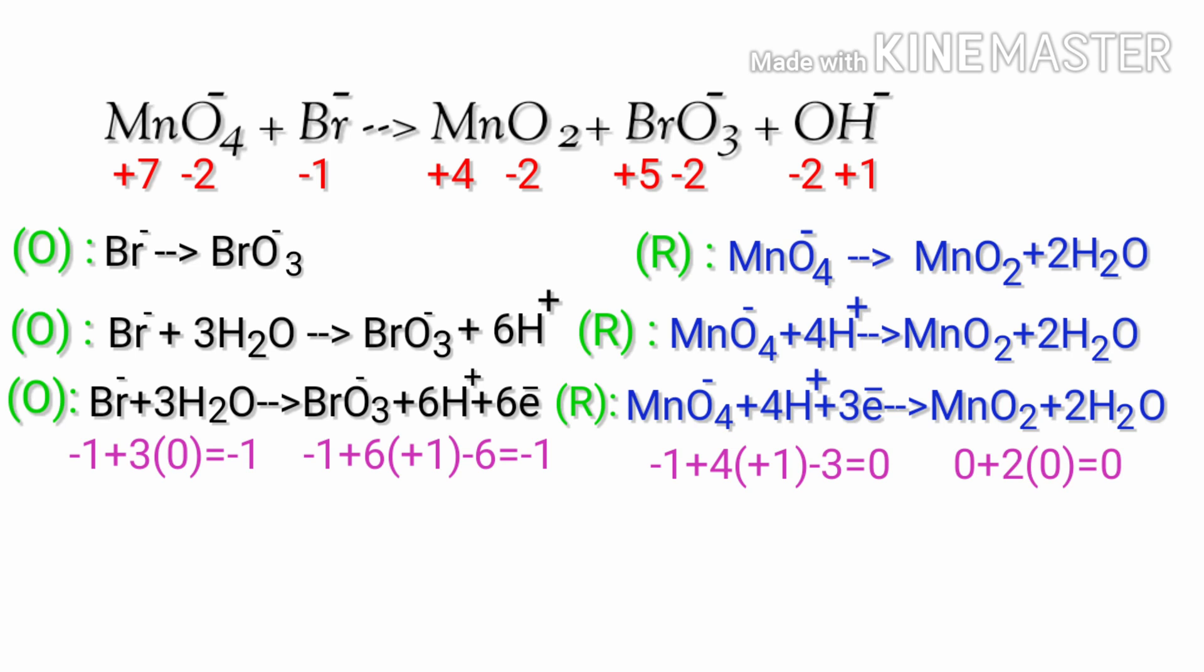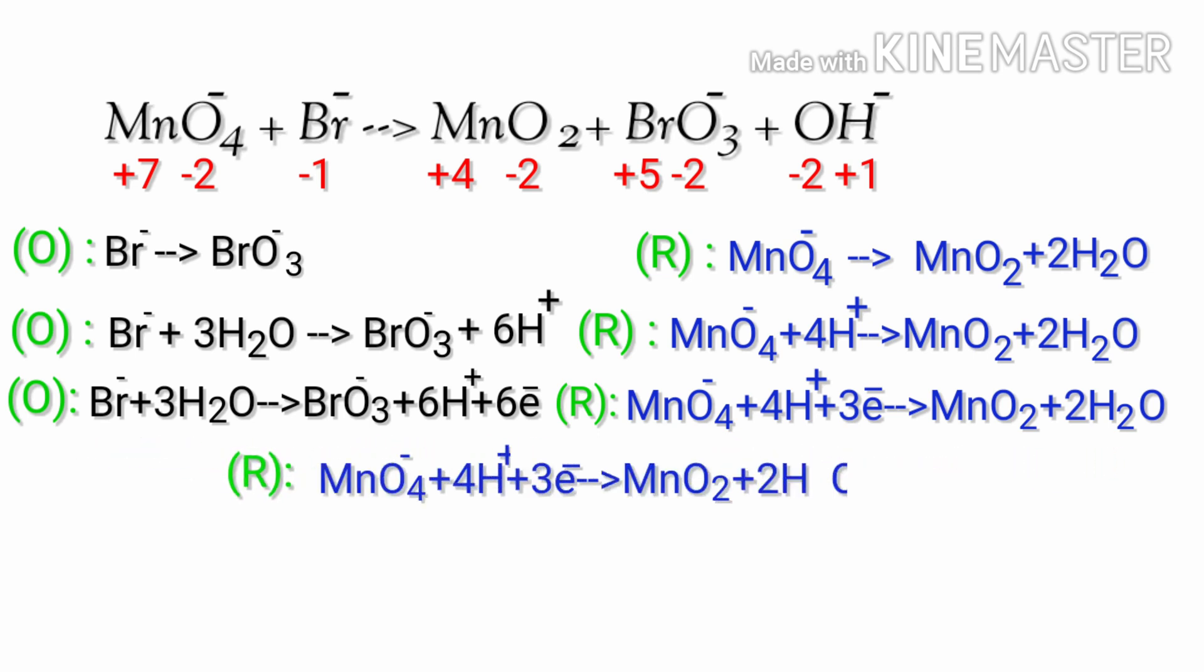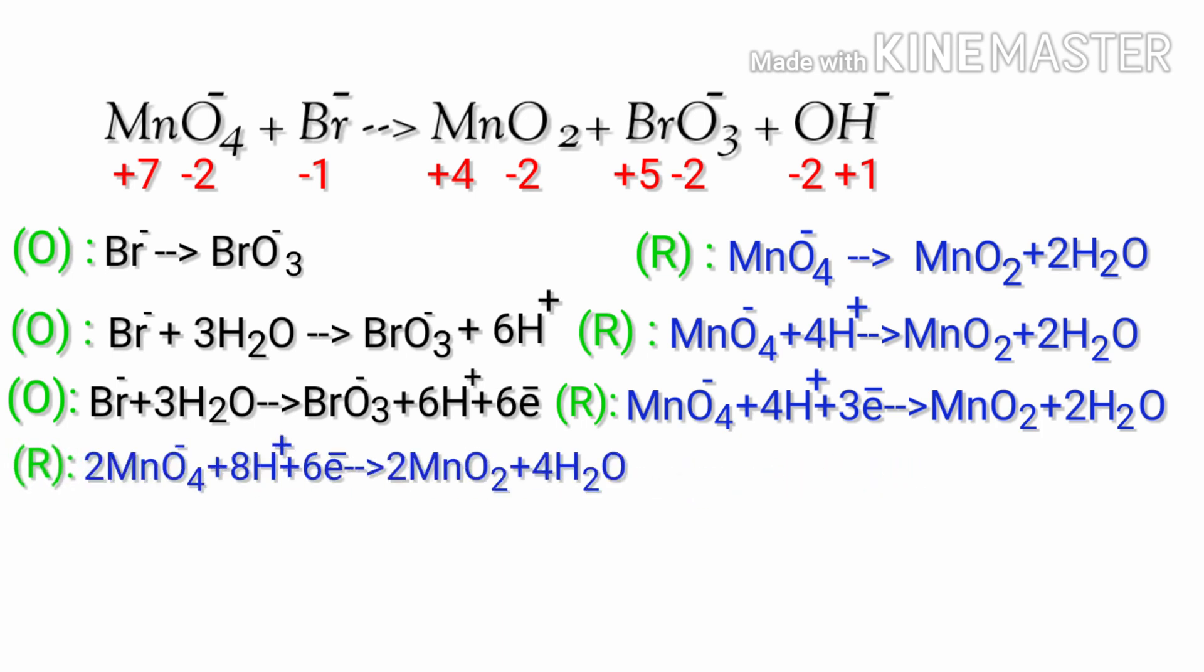We need 6 electrons, not 3. So to get 6 electrons, you can multiply the equation by a coefficient of 2. Now you can add the both reactions.